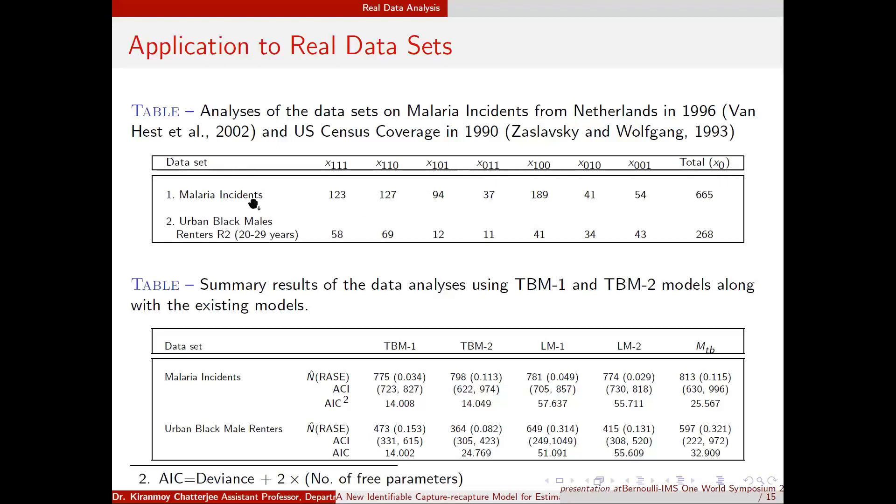One is malaria incidence in Netherlands and another is the population of black males between certain ages in US Census coverage study. We have shown that our method TBM1 and TBM2 have lowest AIC with respect to two other existing models, and also smaller variance. The ACI means Asymptotic Confidence Interval, so our confidence intervals also are relatively tighter. This is the application of our model to these two real data sets.